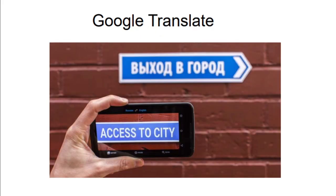The first application we're talking about is Google Translate. Google Translate is basically converting text in one language to another language. It's a classic example of the use of artificial neural networks — we can convert from one language to another using artificial neural networks.